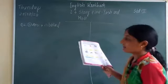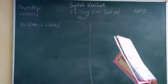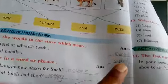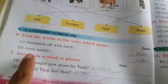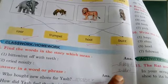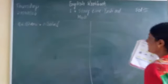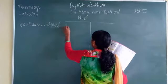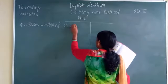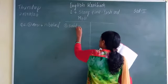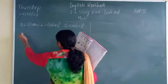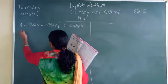The second point in question six is 'cried noisily.' What is the answer for cried noisily? The answer is 'sobbed' — S-O-double-B-E-D. So the second answer is sobbed.